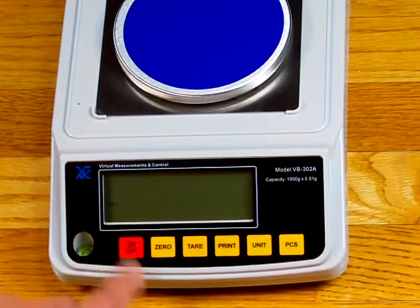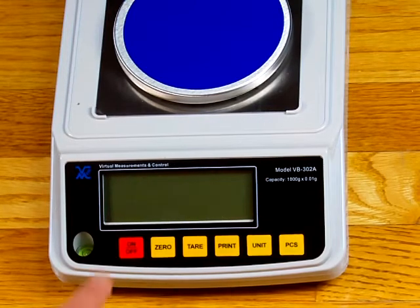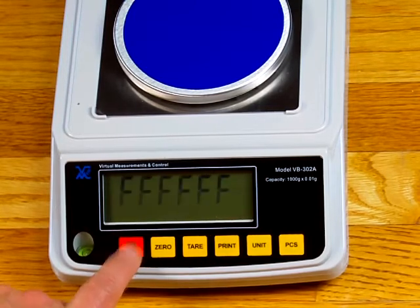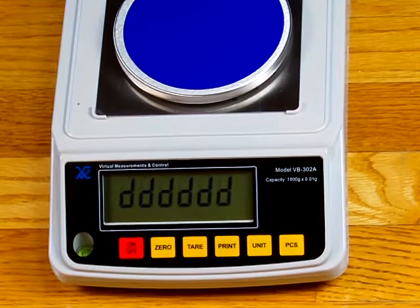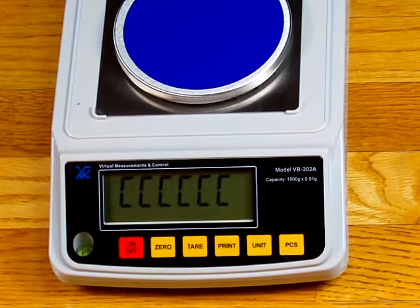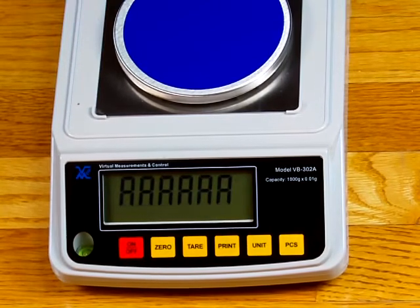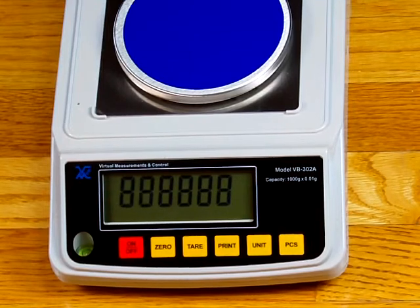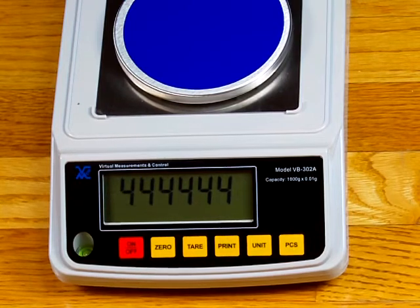And so to do a 5-point calibration, this is simply done by, again, turning on the scale. And this time, instead of pressing just the 0 key, we're going to press the 0 and the unit key together at the same time. And this is going to enable us to do a 5-point calibration.